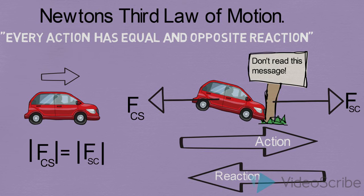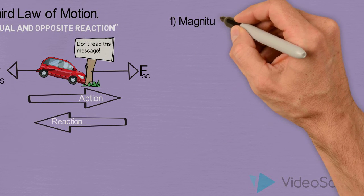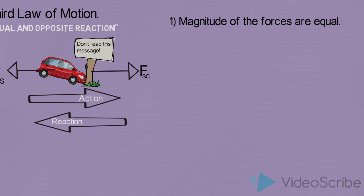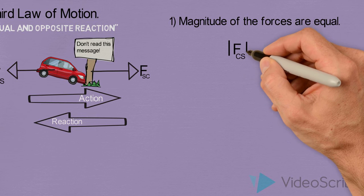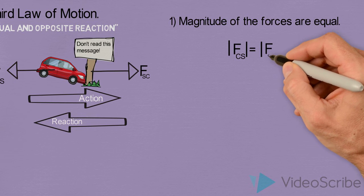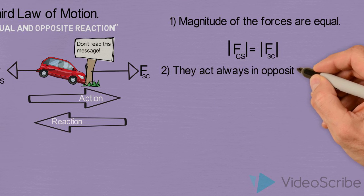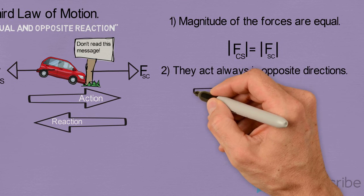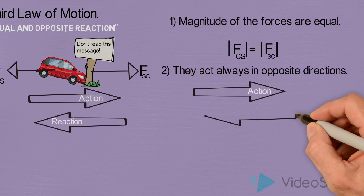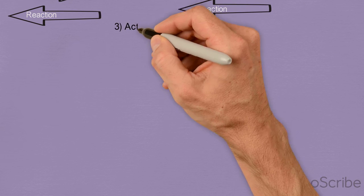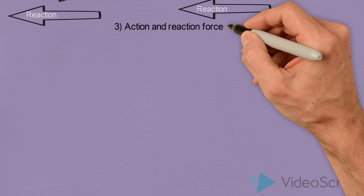Let's understand this law in more detail by breaking it into a few points. The first one is: the magnitude of these forces are always equal — the force on the car due to the signboard equals the force on the signboard due to the car. The second is: they always act in opposite directions — the action was towards the right while the reaction was towards the left. The third, and probably the most important point, is: action and reaction pairs never act on the same body.